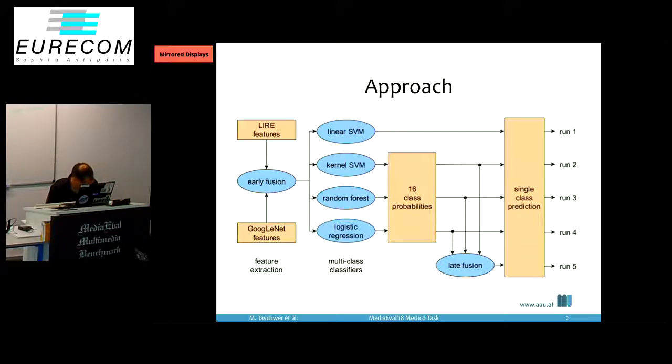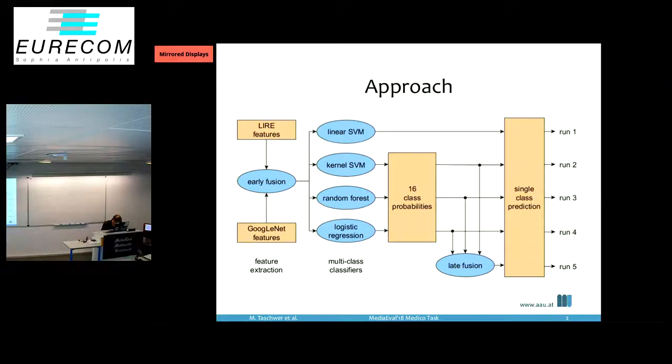The results were, of course, not so good as the other deep learning approaches presented in this session already. But it was not that bad. We got with linear SVM, an MCC of 0.894. And we just participated in the detection task, not in the task with the runtimes, but we also provided the mean processing time or prediction time per image, where linear SVMs gave the best performance.